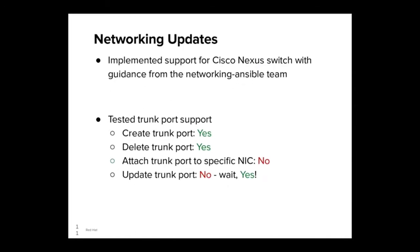Onto networking. We started by adding support for the Cisco Nexus switch into ML2 Ansible Networking with guidance from the upstream Networking Ansible team. They were great at helping us understand what we needed to do and helping us merge our code. Next, we tested trunk port support. We discovered that Neutron already supported the creation and deletion of trunk ports. However, we couldn't attach a trunk port to a specific NIC, so that's a feature we added in Ironic. We also found that updating a trunk port didn't fully work — if a trunk port was attached to a NIC and then updated, the change would not be reflected on the switch. We made plans to implement this, and when we got around to it, we discovered that someone had beaten us to the punch by a week or two, which was great.